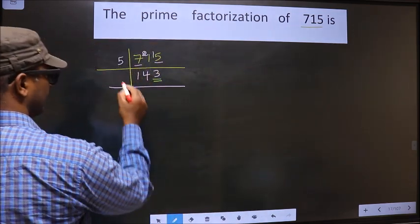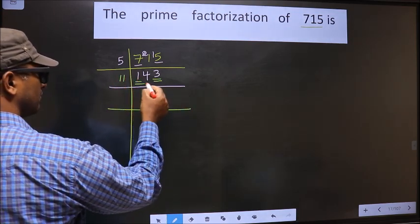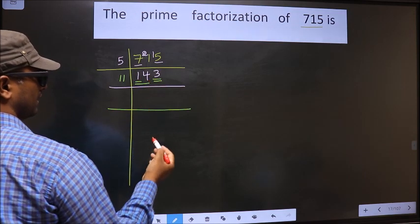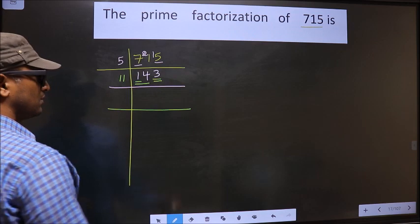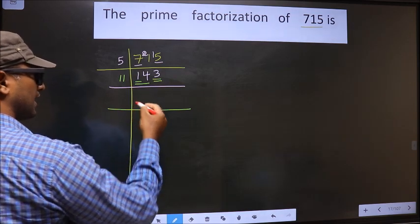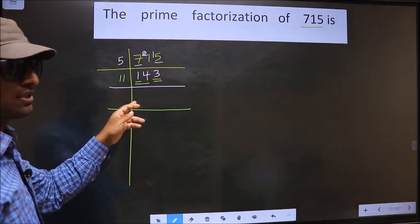So we take 11 here. The first number is 1, which is smaller than 11, so we take 2 numbers, that is 14. Whenever you are taking 2 numbers, you should put 0 at the start. Whether I put 0 or not, it doesn't make any difference, so I am not writing 0 here.